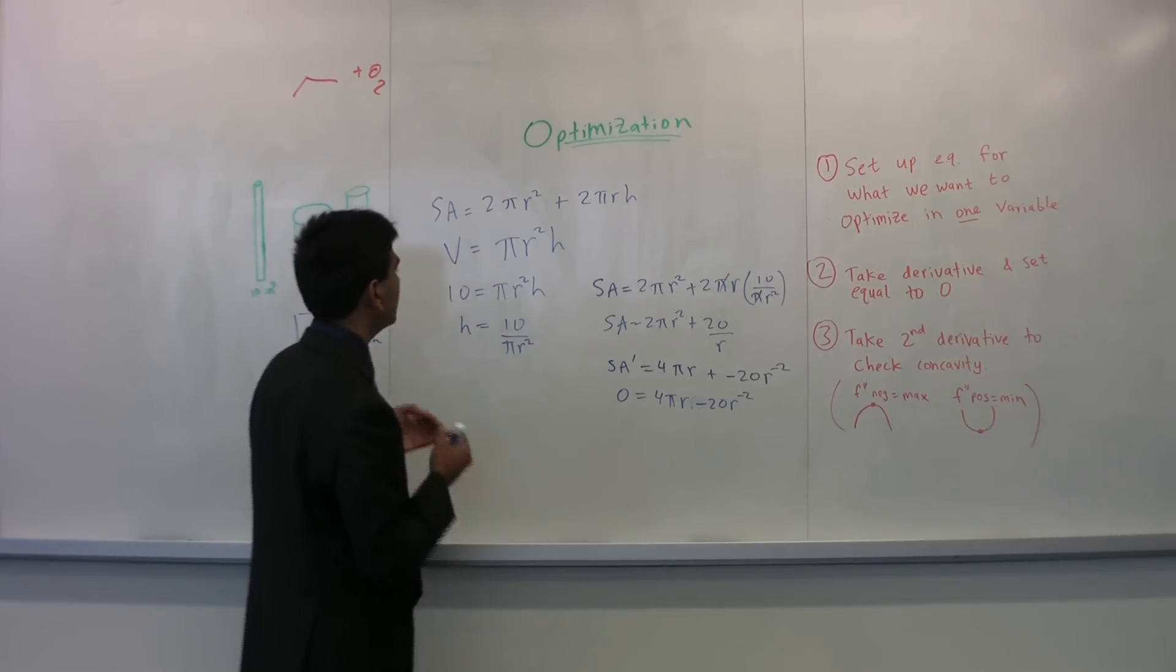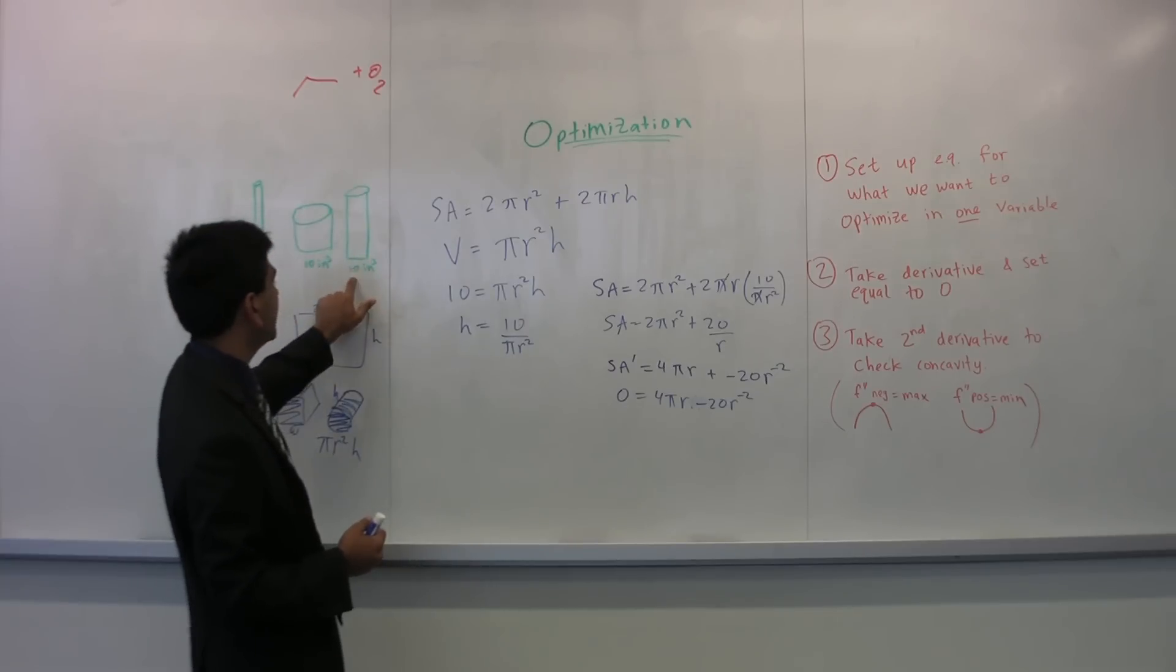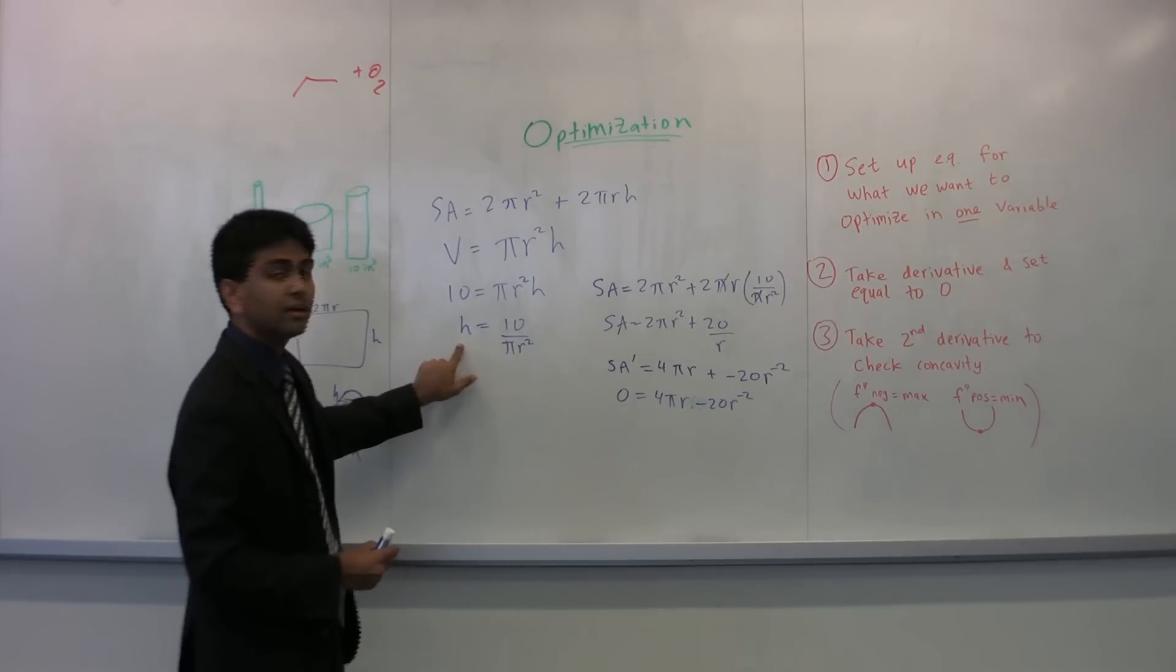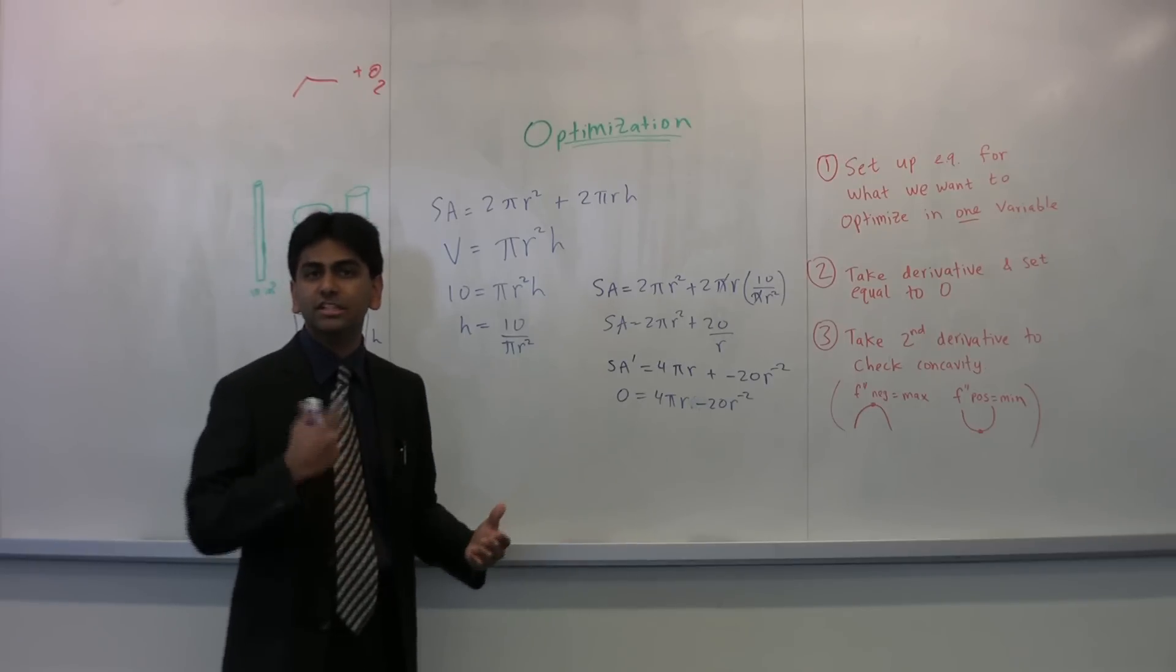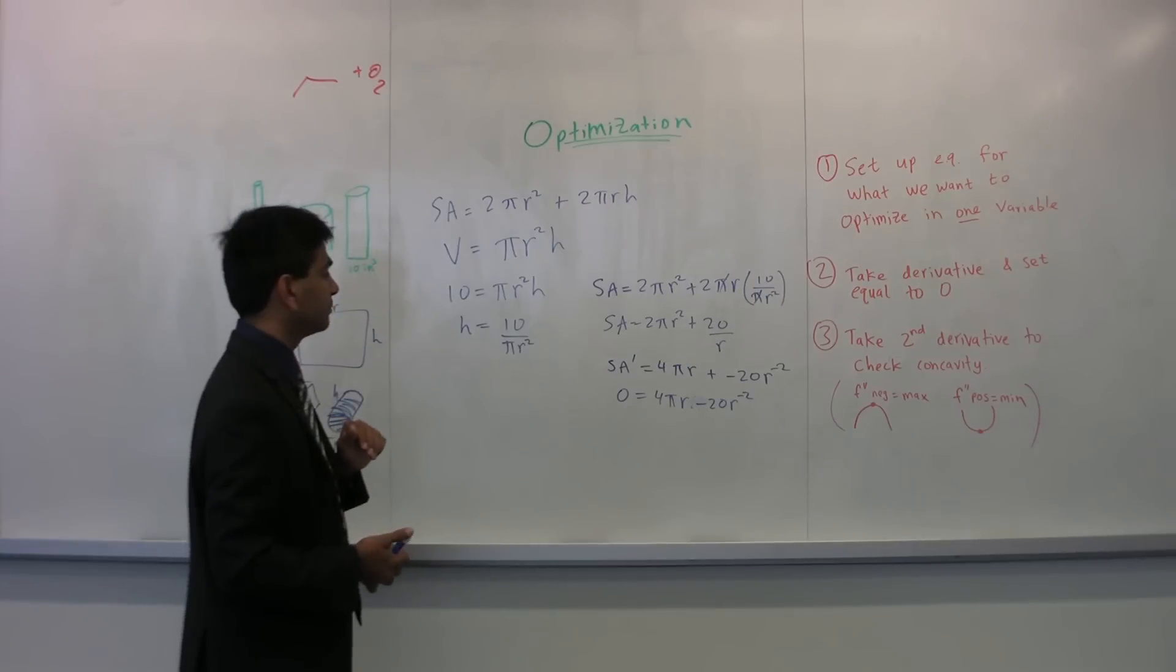And now we'll have the r, the radius, that will actually minimize our surface area while still giving us a volume of 10. And, of course, you can use that r to figure out the h, and then you'll have the dimensions, the r and the h of the optimal propane tank.